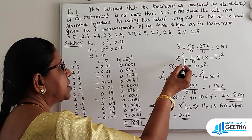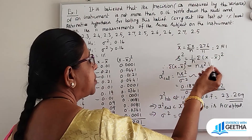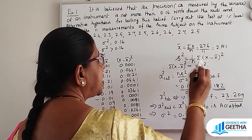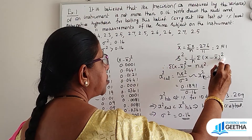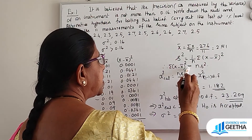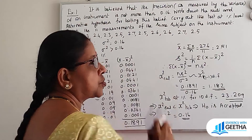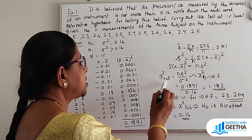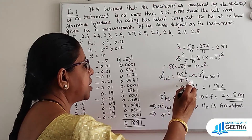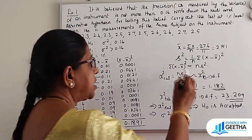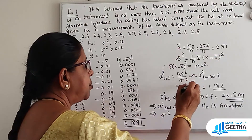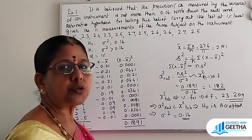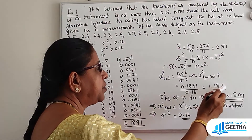The formula for S square is 1 by n times summation x minus x bar whole square, which is the sample variance. So summation x minus x bar whole square is equal to 0.1891, which is nothing but n into S square. Applying the chi-square test formula, chi-square calculated value is n S square by sigma naught square, so that is 0.1891 divided by 0.16, giving 1.192.